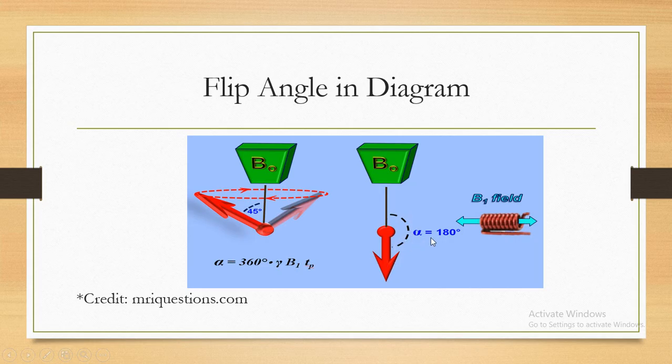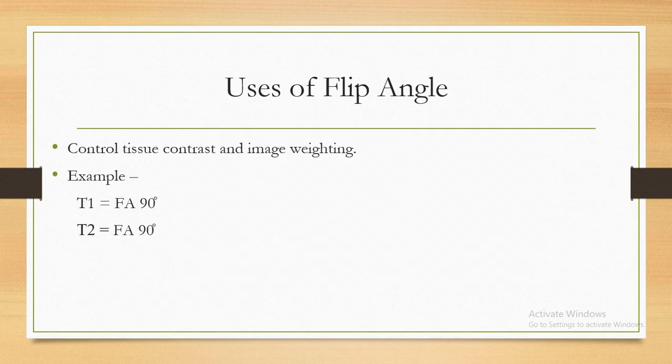The flip angle can be 180 degrees or 90 degrees. Some pulse sequences use 90 degree flip angle, some pulse sequences use 180 degree flip angle. For example, T1 weighted image flip angle is usually 90 degrees. T2 weighted image flip angle is usually 90 degrees.